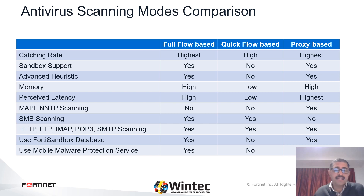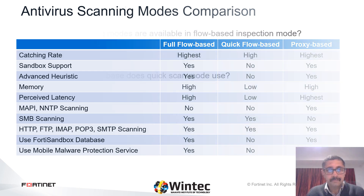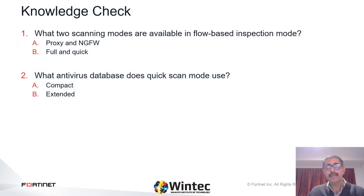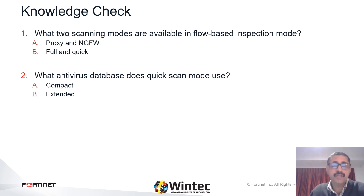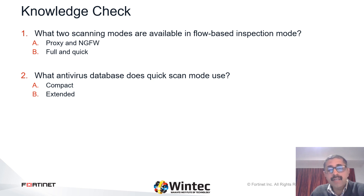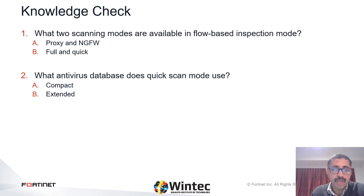It's evident and self-explanatory, but please give it a moment. Before we end this video, a quick knowledge check. Question one: what two scanning modes are available in flow-based inspection mode — proxy and next-generation firewall, or full and quick? Question two: what antivirus database does quick scan mode use — compact or extended? Please fill in your answers on the chat.